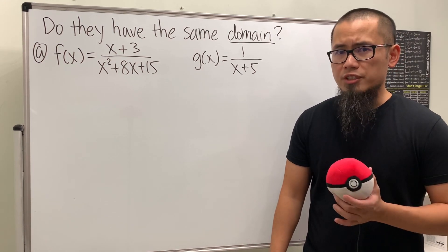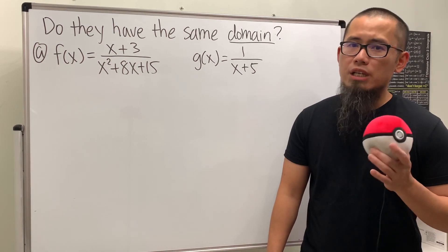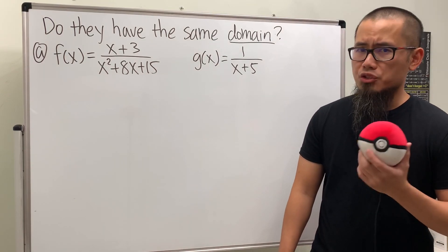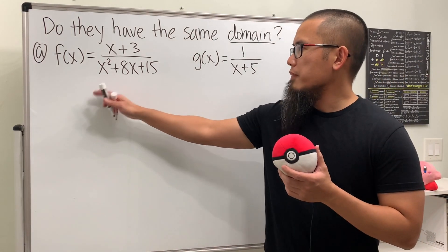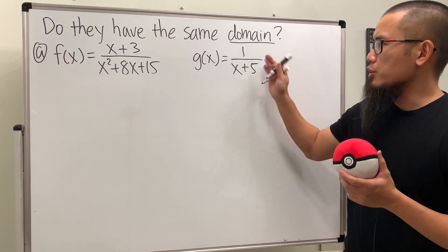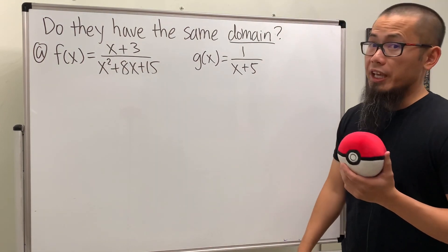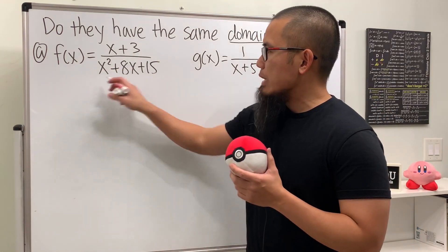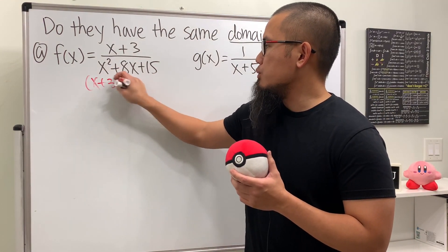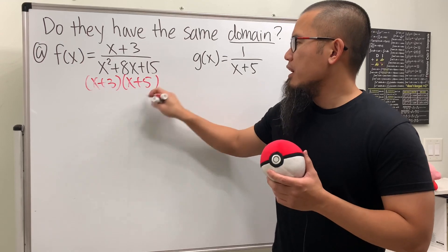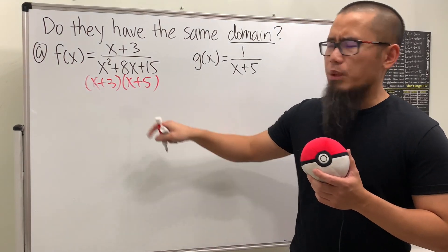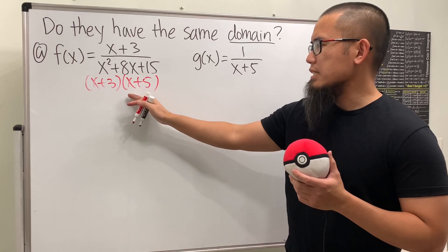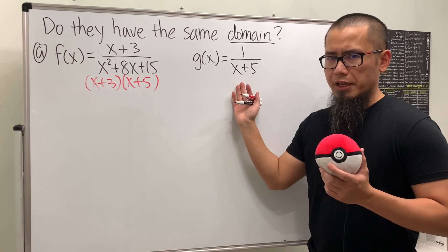Sometimes two functions look the same but they actually have different domains. In this video we are going to talk about three examples on just that. For the first one we have f of x and g of x. If we look at f of x, it seems like we can factor this as x plus 3 times x plus 5, and it seems that we can cancel and just get 1 over x plus 5, which is the same as g of x.